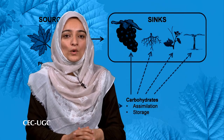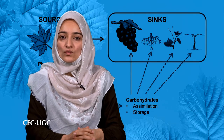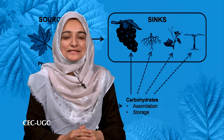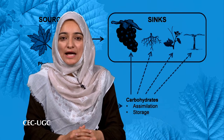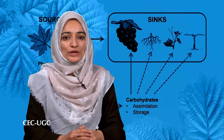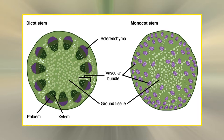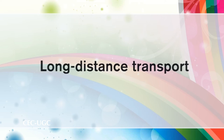In most species studied so far, sugars become more concentrated in the sieve elements and companion cells than in the mesophyll. Once inside the sieve elements, sucrose and other solutes are translocated away from the source, a process known as export. Translocation through the vascular system to the sink is referred to as long-distance transport.